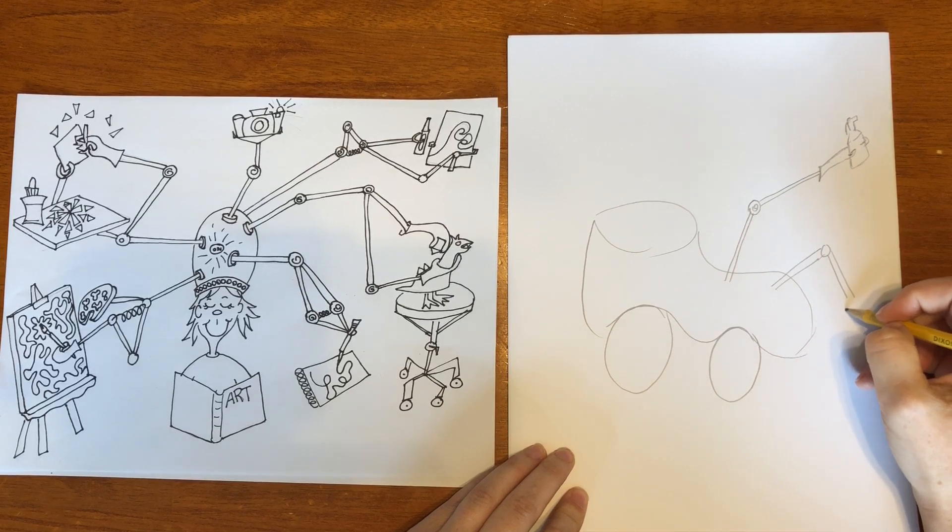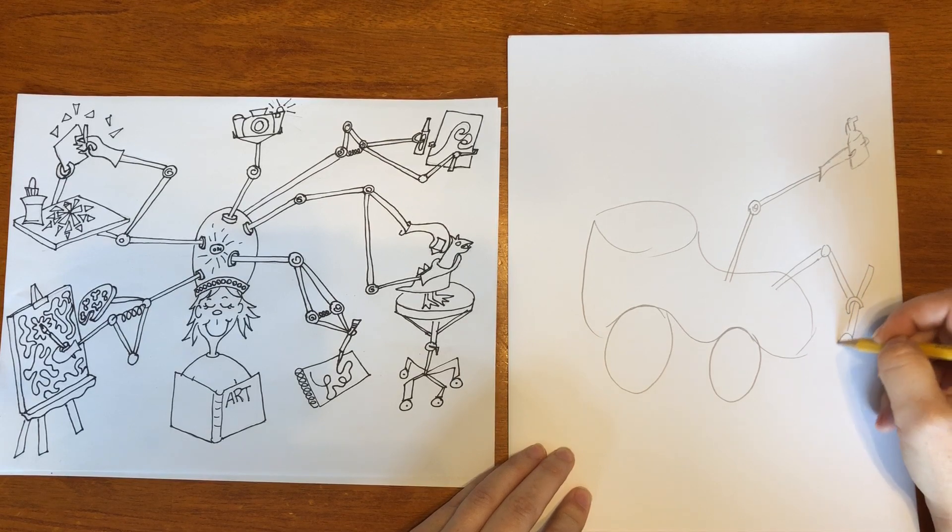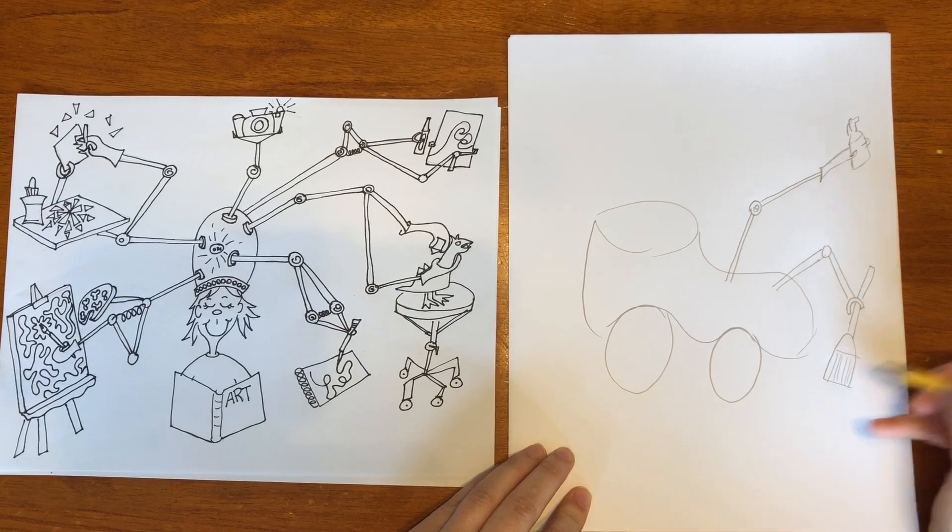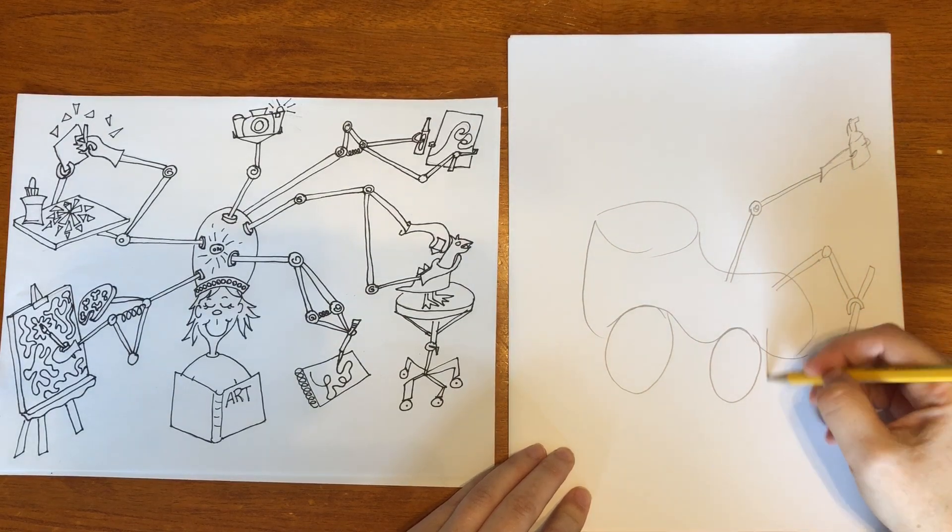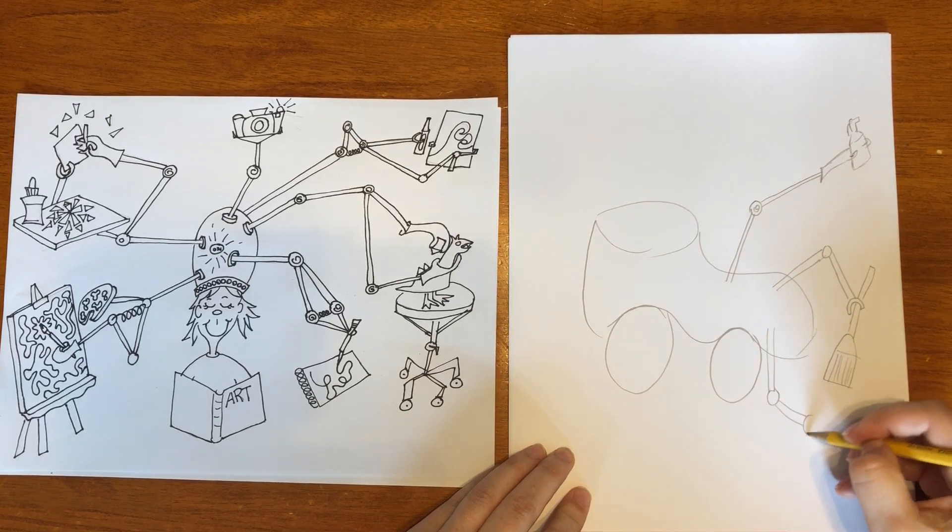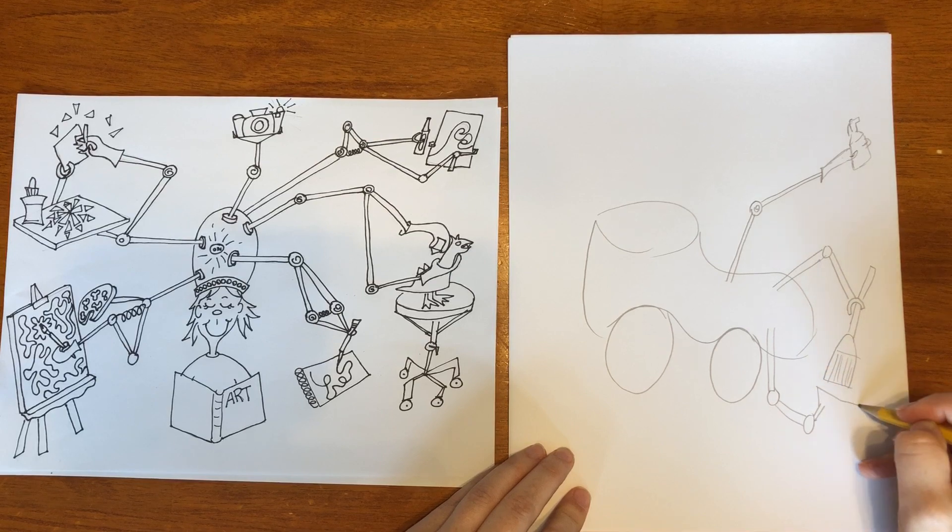So maybe I'm going to make that U shape again. And this is going to hold my broom. And then I would need another one down here to hold the dustpan. Or maybe it would just be a dustpan.